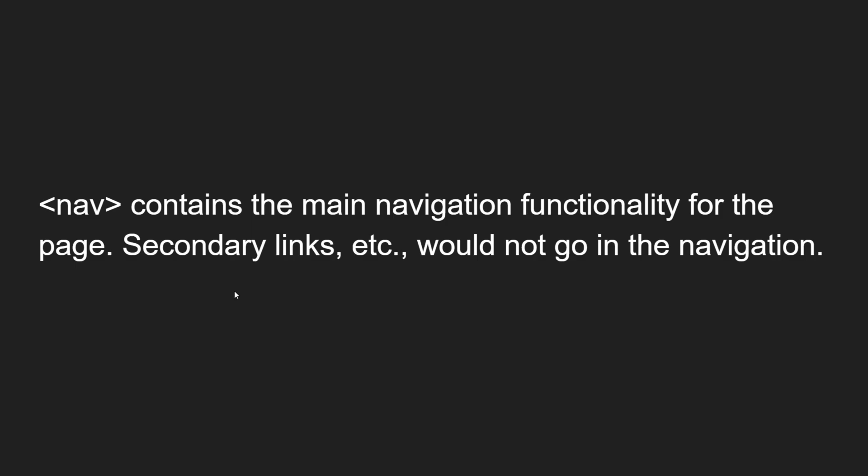Next is the nav element. Nav contains the main navigation functionality for the page — secondary links would not go into the navigation. Links like home, about us, and contact us — the main navigation present in the web page — should come under the nav element. The last one is the footer. Footer represents a group of end content for a page. At the bottom of any page you will have a strip that is called a footer, defined with the footer element.